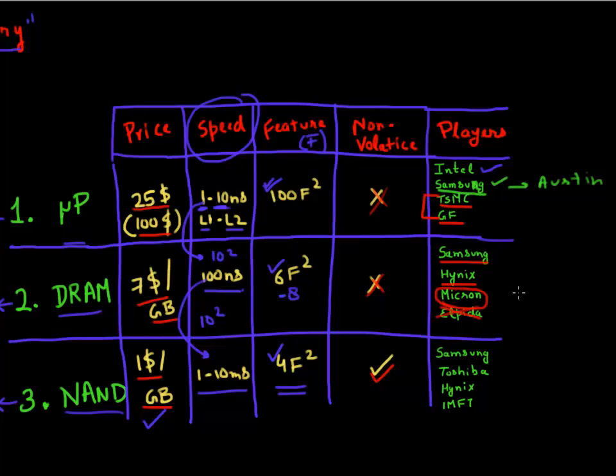And NAND flash memory, again, number one player is Samsung. Number two is Toshiba. Number three is again Hynix. And there's also this IMFT, which is a joint collaboration between Intel and Micron. And they also make NAND flash memory chips, and they are the number four player.